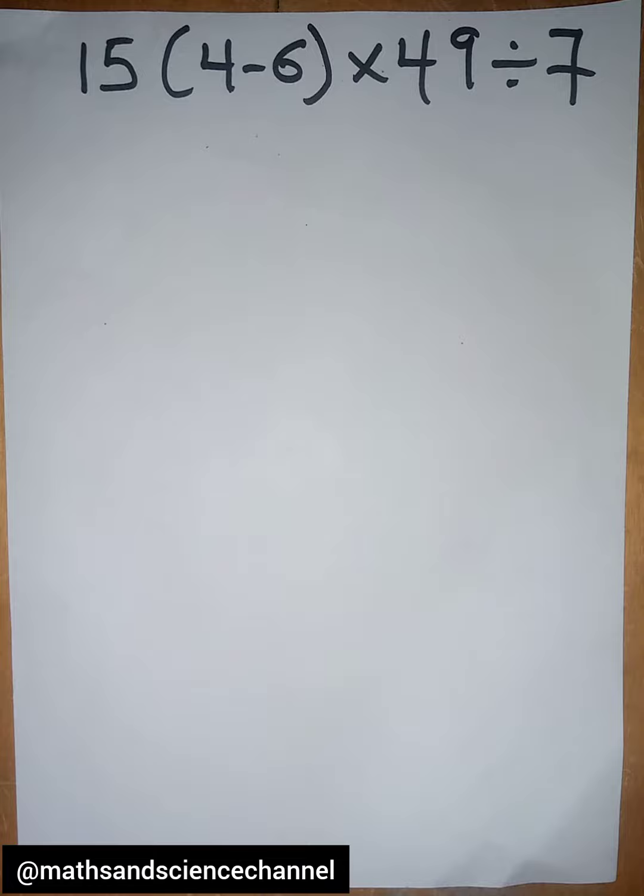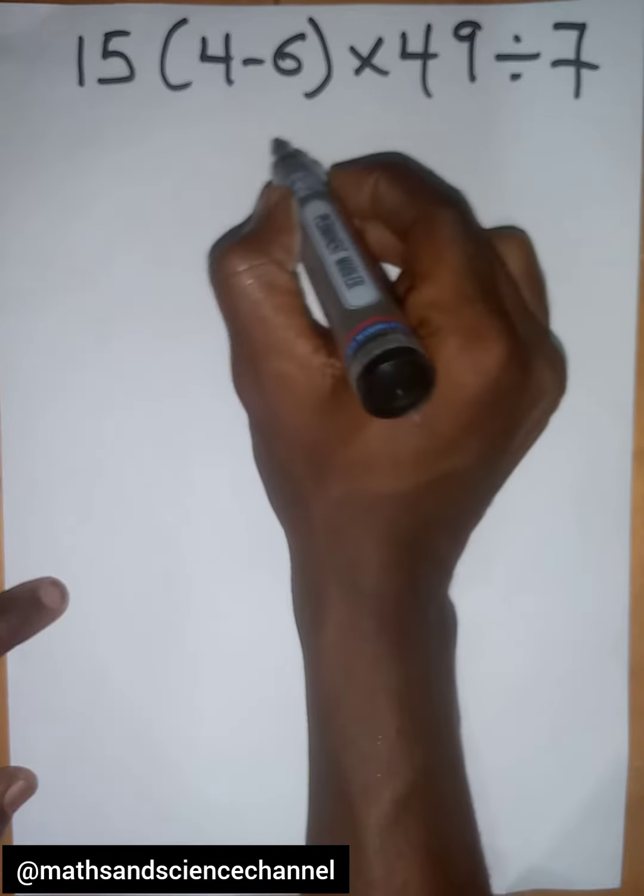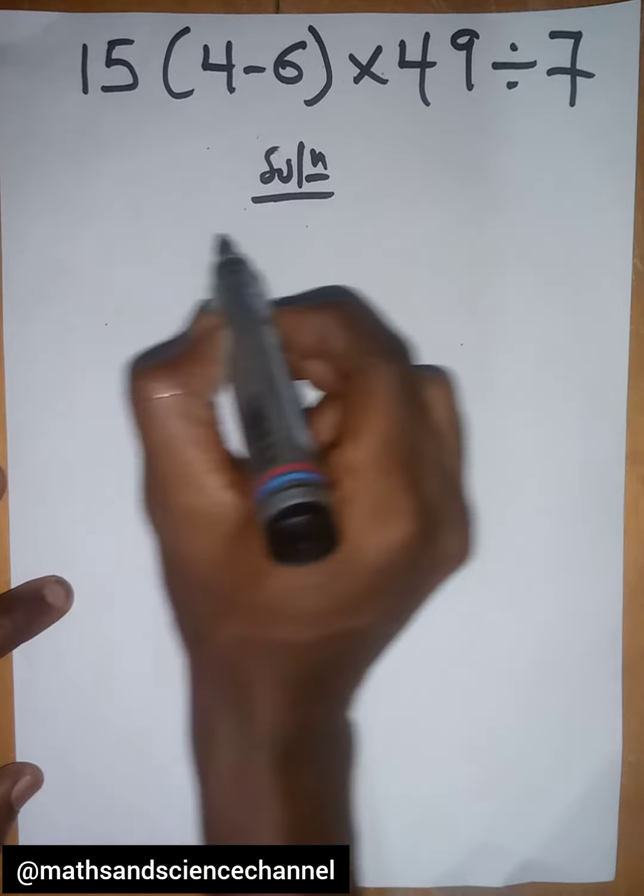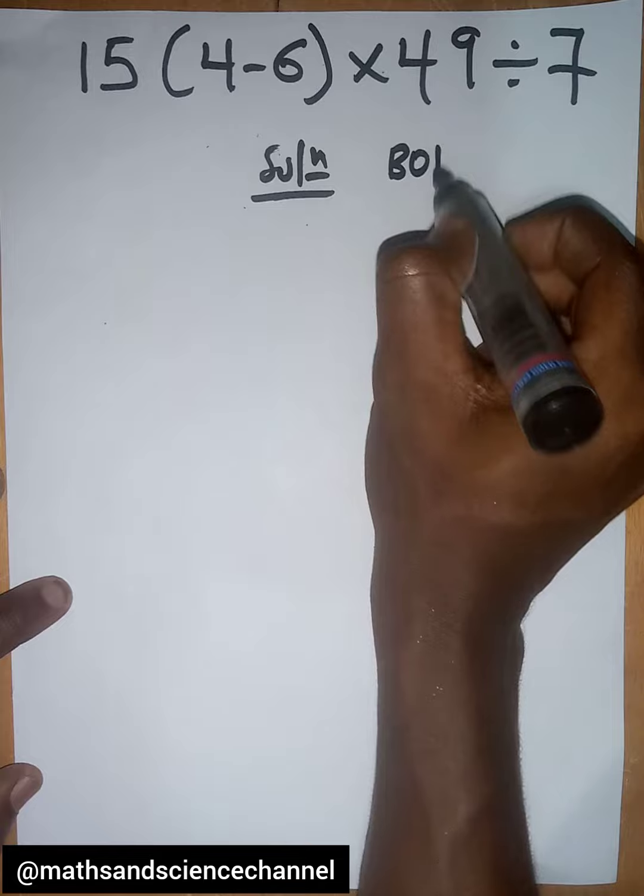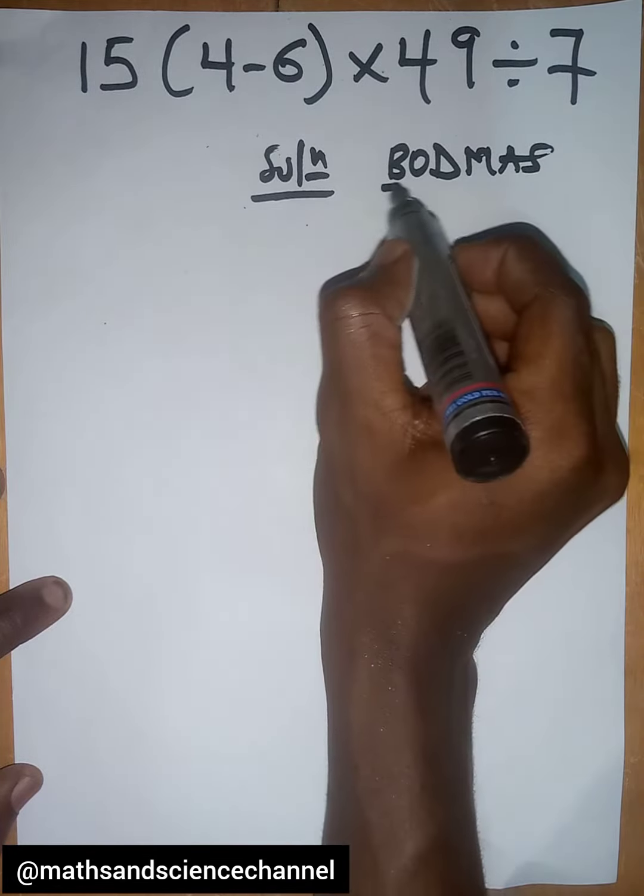An easy way to solve this is to use BODMAS. So first, we have brackets, then division, multiplication, addition, and subtraction. You can see there is a bracket here, so we look at that first.